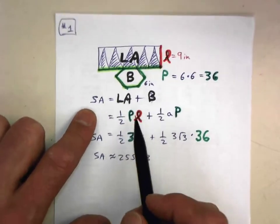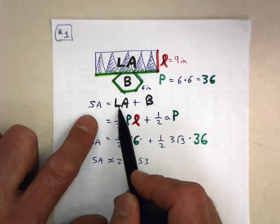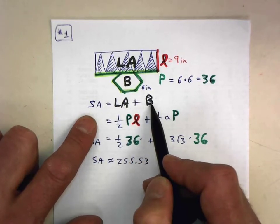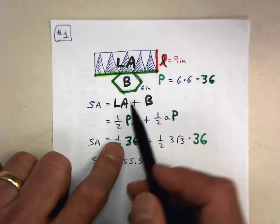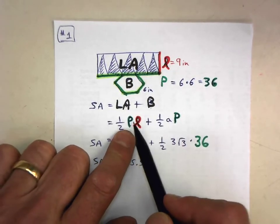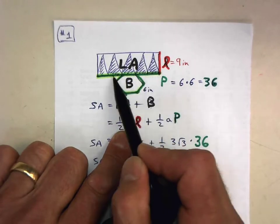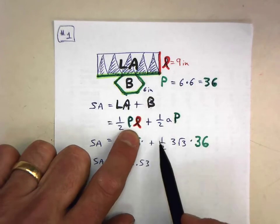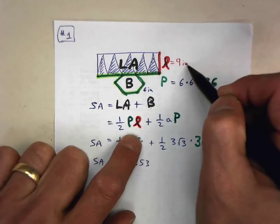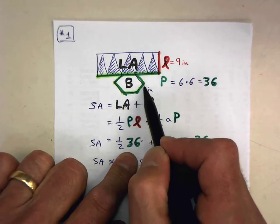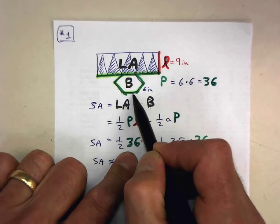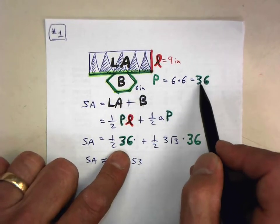We use the basic formula: surface area equals lateral area plus one base area. Lateral area equals one-half times the perimeter times the slant height. The slant height they told us is nine. For the perimeter: one side of the hexagonal base is six inches and there are six sides, so the perimeter is six times six, which is thirty-six.